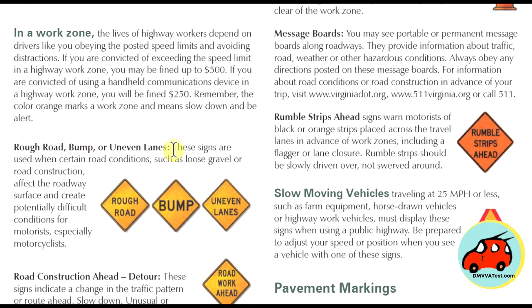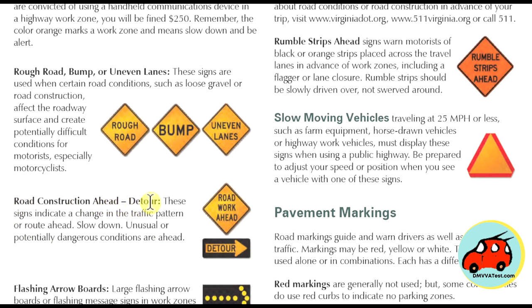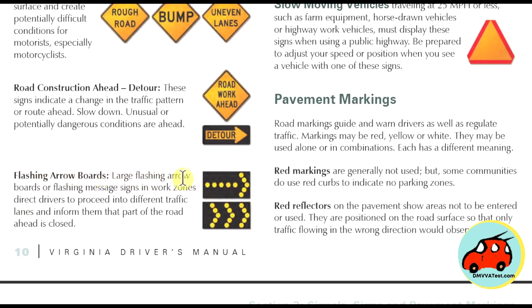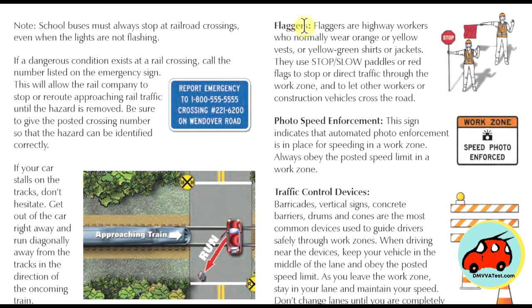Rough road, bump, or uneven lane signs are used when road conditions such as loose gravel or road construction affect the road surface and create potential difficult conditions for motorists, especially motorcyclists. Road construction ahead and detour signs indicate a change in traffic pattern or route ahead — slow down because unusual or potentially dangerous conditions are ahead. Large flashing arrow boards or flashing message signs in work zones direct drivers to proceed in different traffic lanes and inform them that part of the road ahead is closed. Flaggers are highway workers who normally wear orange or yellow vests or yellow-green shirts. They use stop and slow paddles or red flags to stop or direct traffic through the work zone.